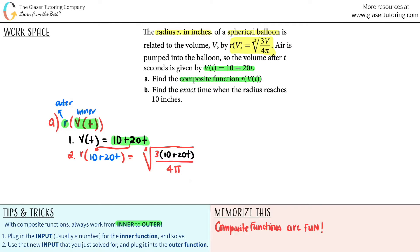If you wanted to simplify this out, we can. So maybe I'll just say that this is r of V of t, which equals the cubed root of, if you wanted to distribute,